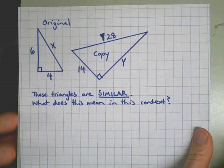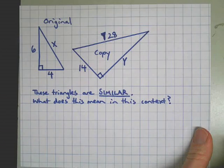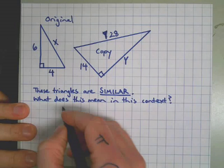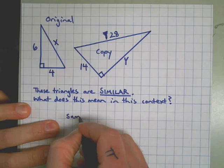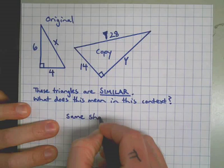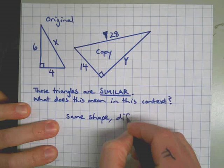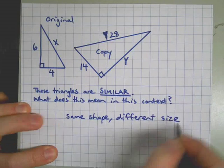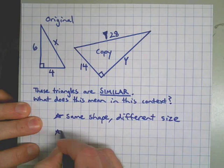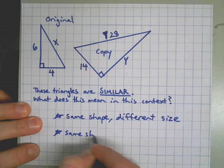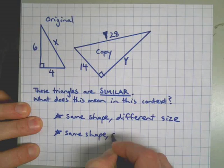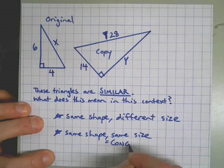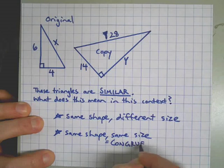They are similar. What does this mean in this context or situation? As we've learned in class, what similar means is same shape and different size. Remember, if they happen to be same shape and same size, we would call that congruent. These two are not congruent; they are similar. One is larger than the other.